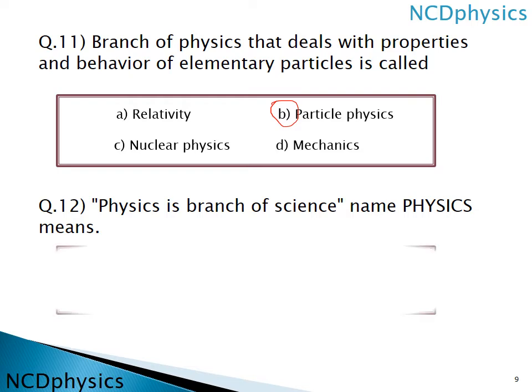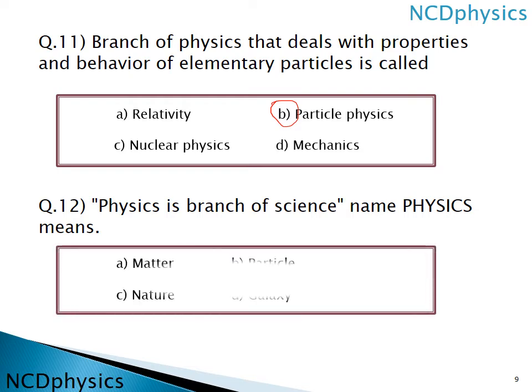Question number 12: the name 'physics' means what? Physics means 'nature'. So physics is about nature — for example, we have an object which is matter, we apply force, and we ask: what is the effect of the force, what is the motion? So we talk about nature.